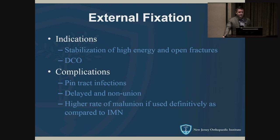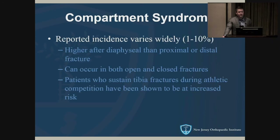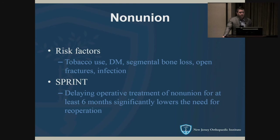Indications for external fixation include open fractures, high-energy injuries with soft tissue concerns, and damage control orthopedics. Complications include pin tract infections — particularly with extended use — delayed union, and nonunion if treated definitively in the ex-fix. Other complications include compartment syndrome and infection. The incidence of compartment syndrome ranges from 1 to 10% across studies; mid-shaft fractures have a higher incidence given the bulk of muscle tissue there. Athletes can get compartment syndrome after tibia shaft fractures sustained during competition. Risk factors for nonunion include tobacco use, diabetes, segmental bone loss, open fractures, and infection.